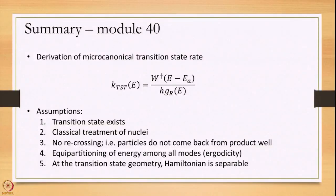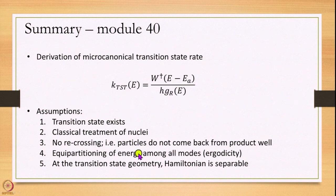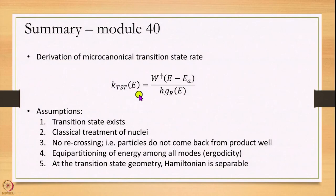This is really the final expression for microcanonical transition state theory: k = W†(E - E_A) / (h · G_R(E)). The assumptions are very similar to canonical TST: a transition state exists; nuclei are treated classically; there is no recrossing; writing the delta function assumes ergodicity — all energy states are equally possible, which has profound consequences for thermodynamics and statistical mechanics; and the Hamiltonian is separable at the transition state geometry. Following these same assumptions, we have derived the expression for transition state theory at constant energy.